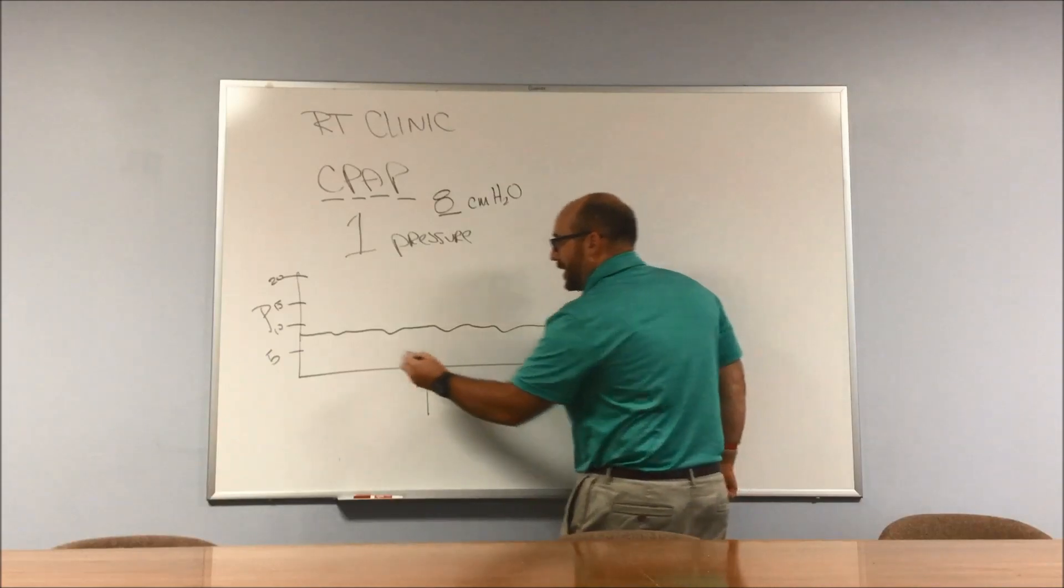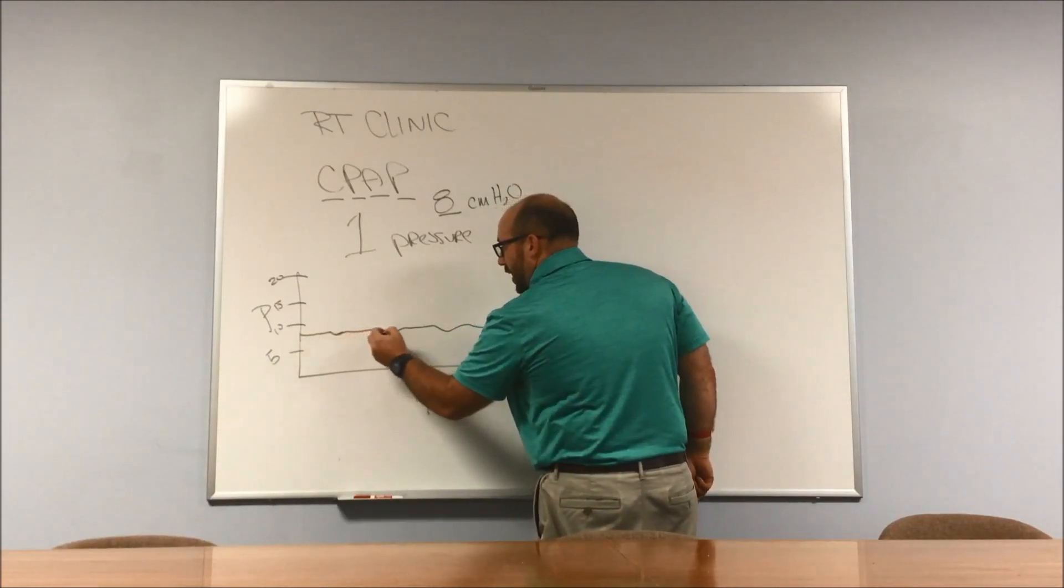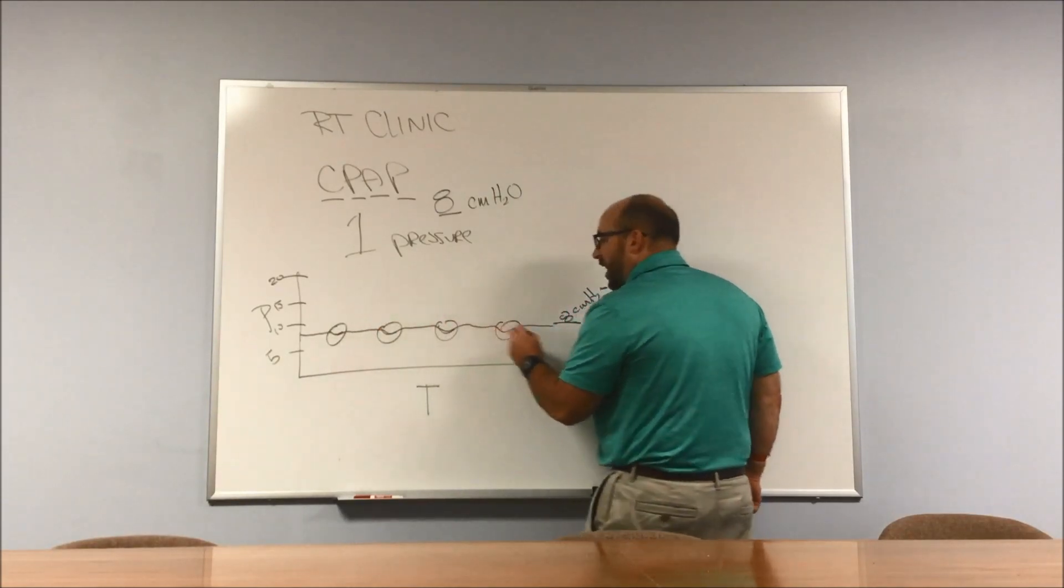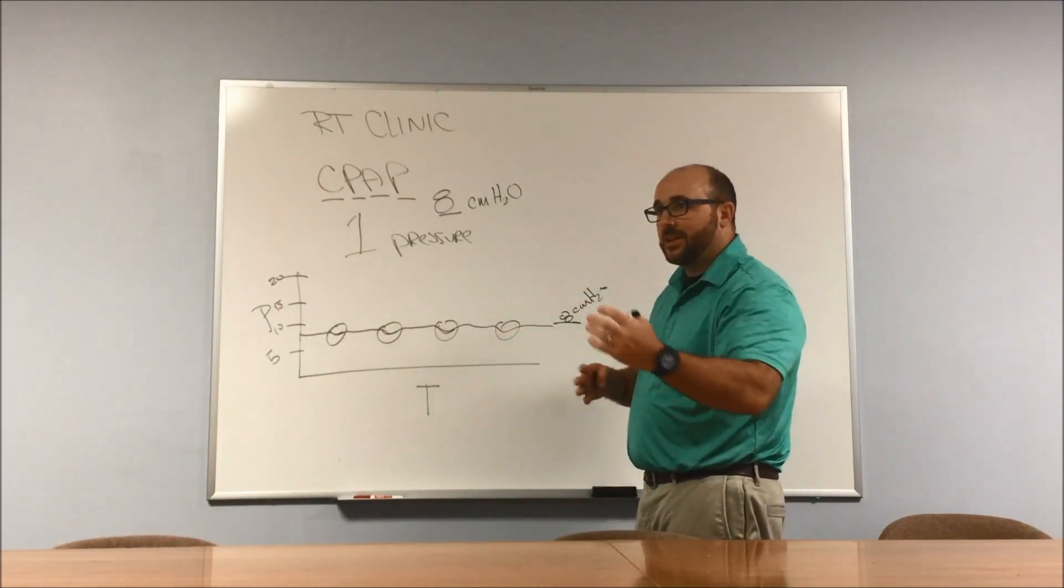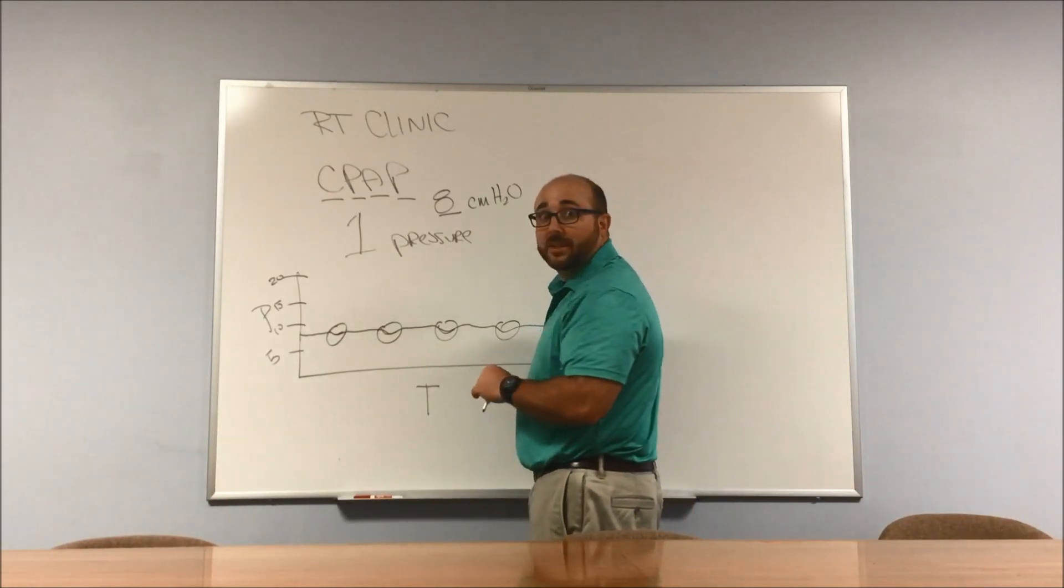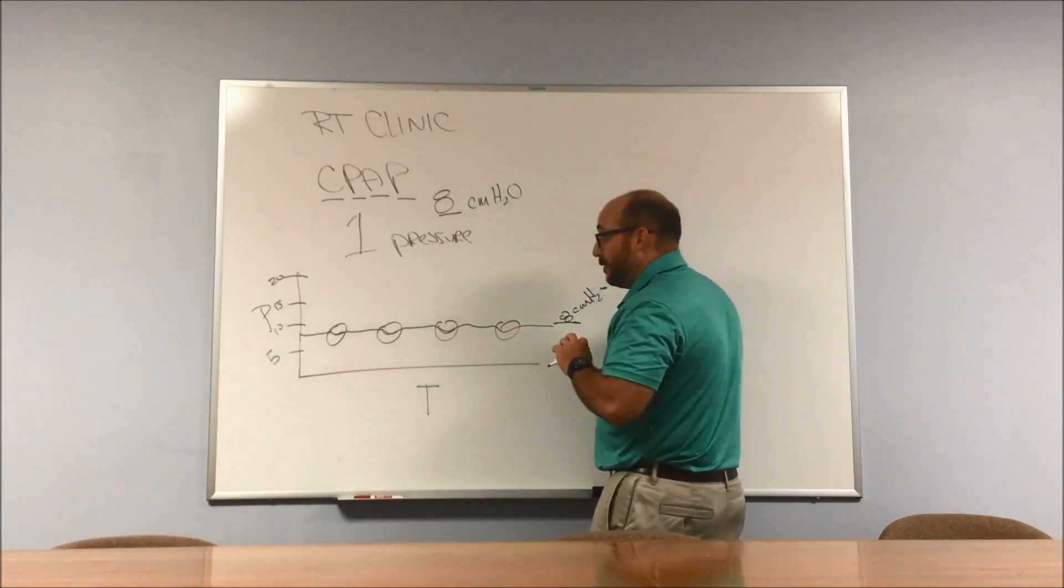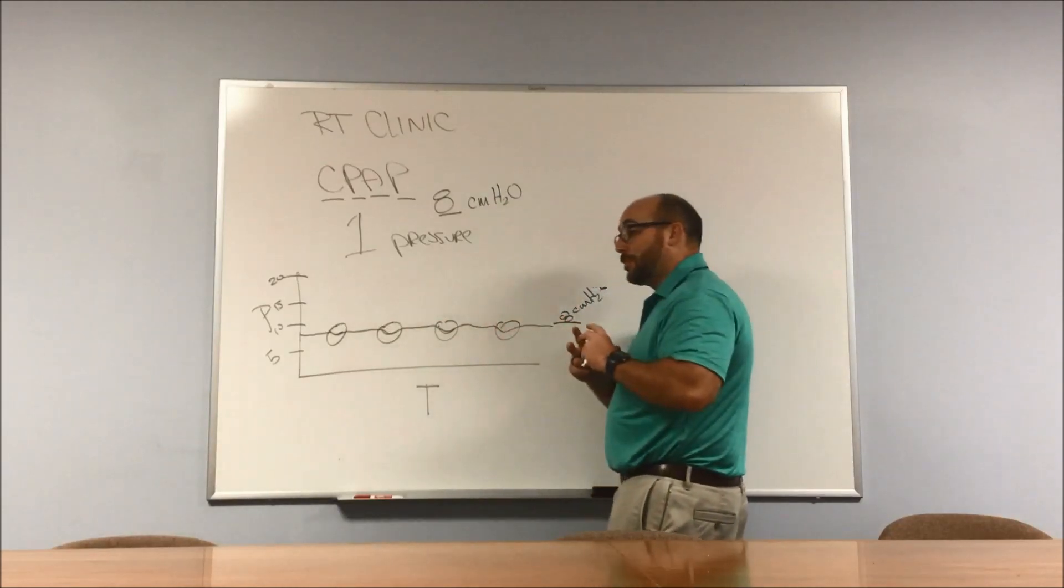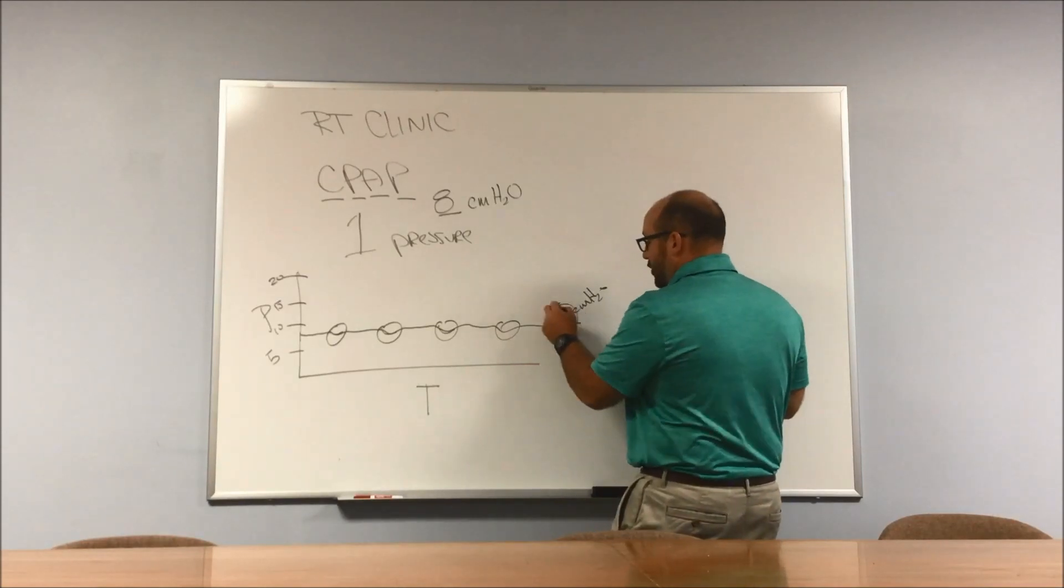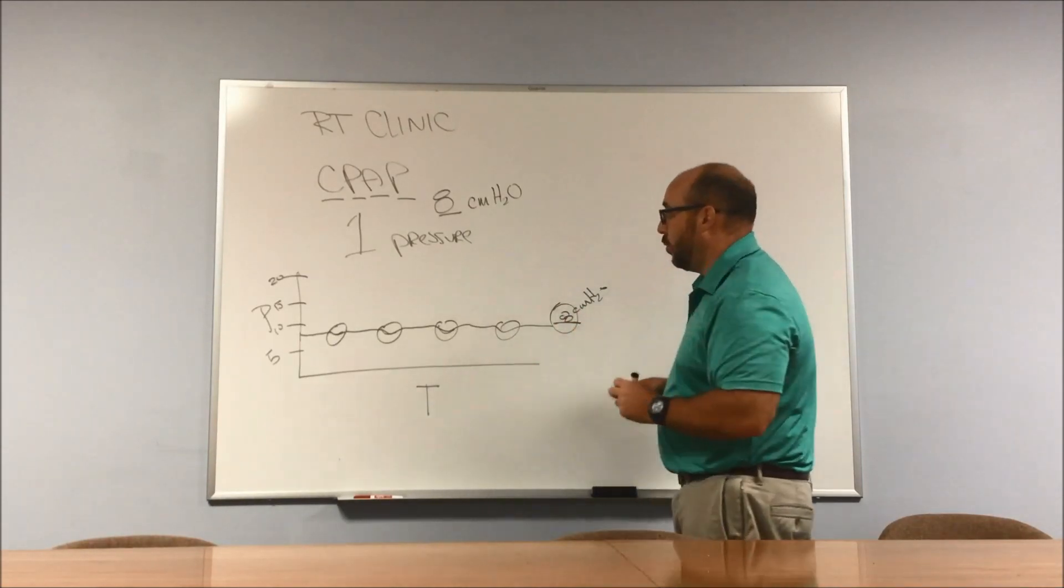You're going to see small little dips in it over time, but mainly that one continuous pressure at 8 centimeters of water. These little dips in that continuous pressure - that's going to be a patient starting a breath. A lot of CPAP machines can actually increase the amount of flow that comes in. So pressure is really delivered as flow is delivered and we measure pressure. We're going to deliver a certain amount of flow and then measure the pressure coming back.